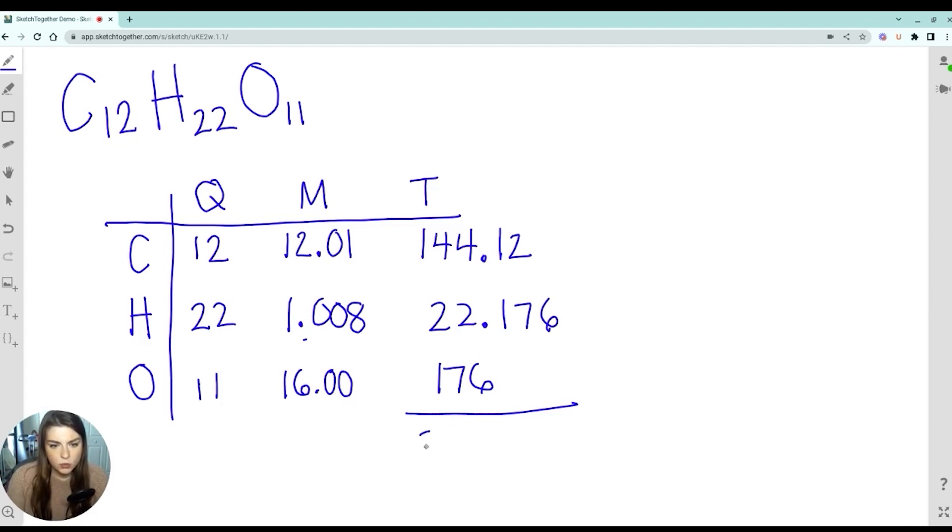Okay, we come out to 342.296 grams per mole, which is quite a bit. Let's see significant figures. Really, we should just go out four sig figs. So the six is going to kick the nine up. The nine now is a 10, so it'll be 342.30.